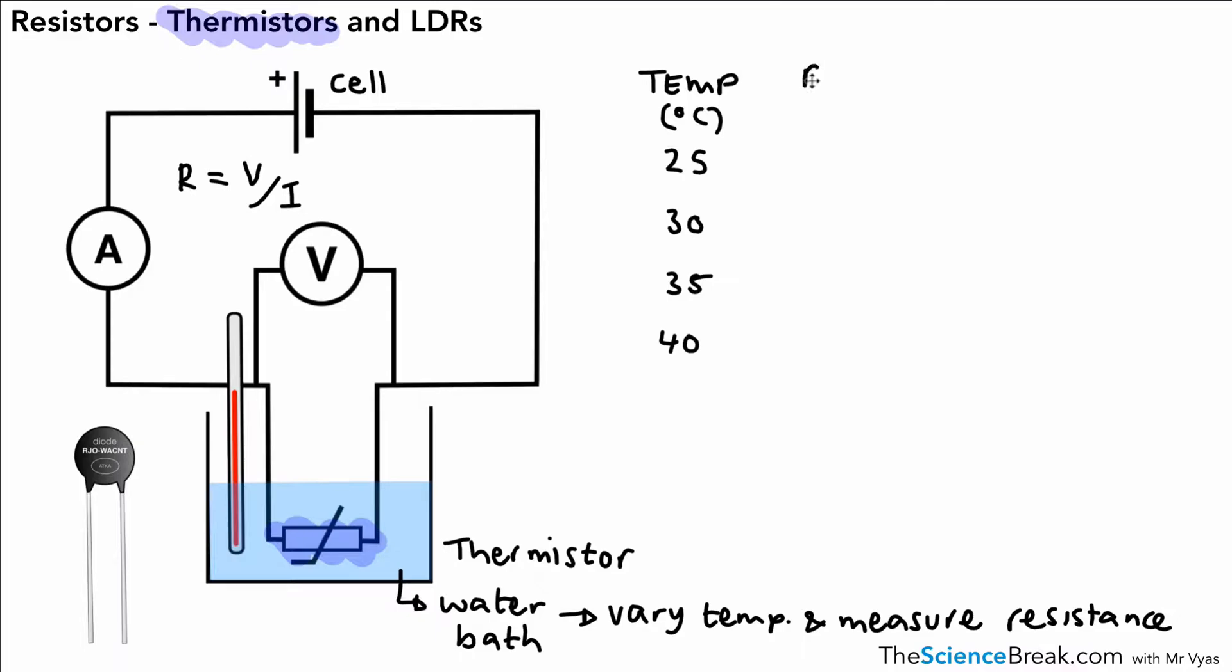Then we could measure the potential difference for each of those temperatures measured by the voltmeter. We could measure the current shown on the ammeter, and then we could use our equation R is V over I—potential difference over current—to work out the resistance.